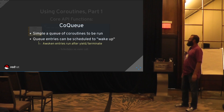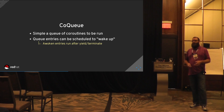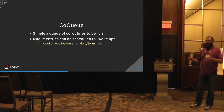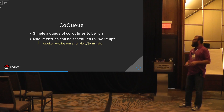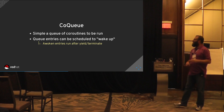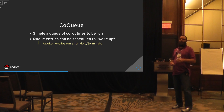Coroutine queues are a simple queue of coroutines to be run. You can queue up multiple related tasks — like block driver flushes — where you want to make sure they all complete. You can schedule queue entries to wake up, and awoken entries will run after a yield or terminate. When you call qemu_coroutine_yield, control goes back to the qemu_coroutine_enter function, then we go through the queue and run each coroutine that's been moved to the awake queue.